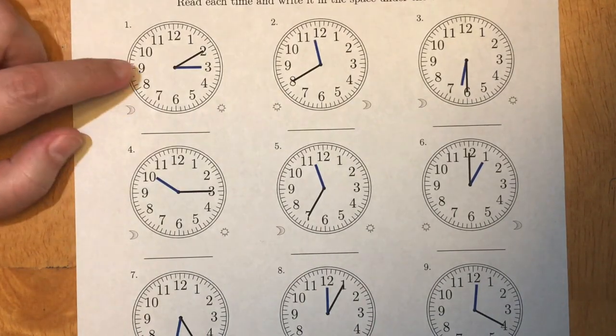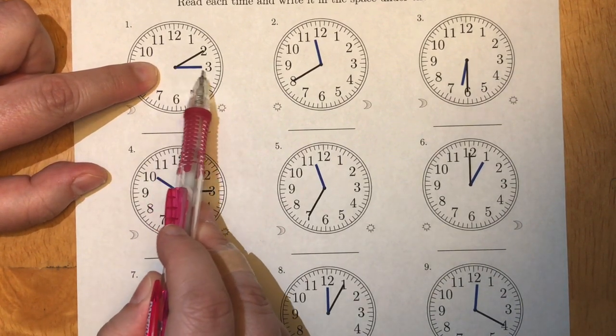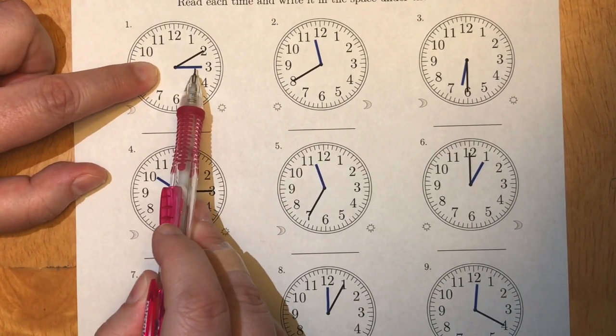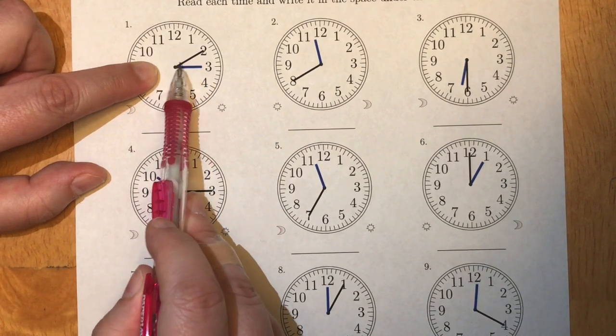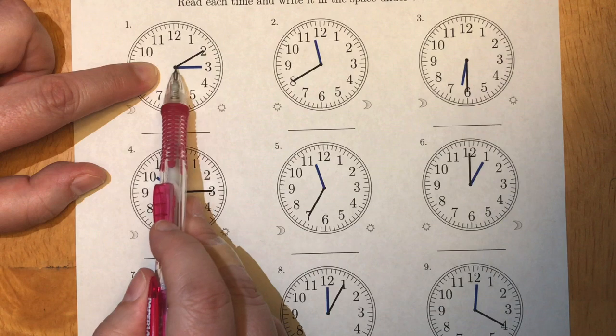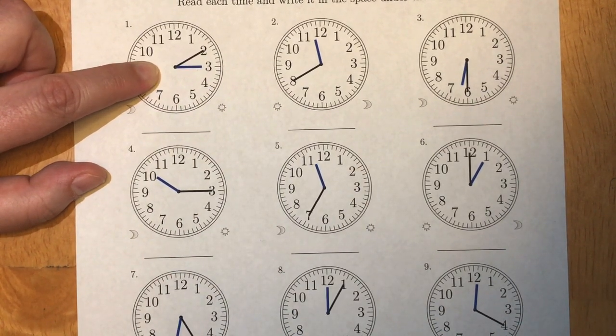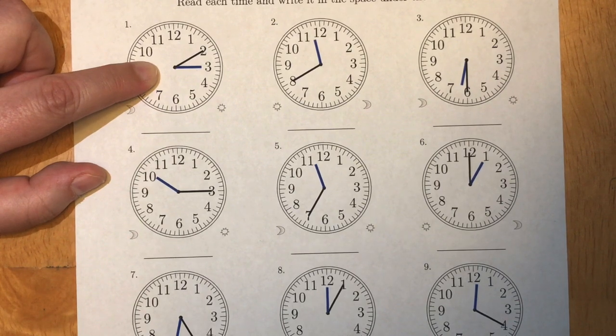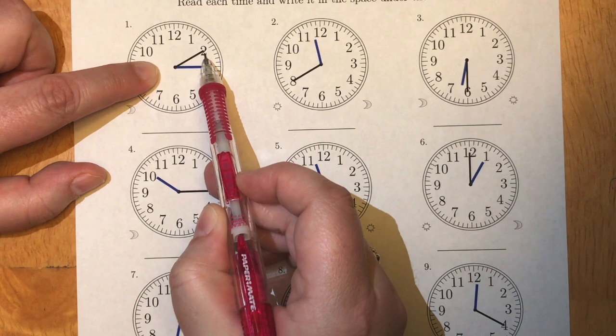In our first clock here, the blue hand is the shorter hand so this tells me the hour. The longer hand which is the black one tells me the number of minutes. So usually the minutes are a little bit easier to read. So if we look at it, our minute hand is pointing at the two.